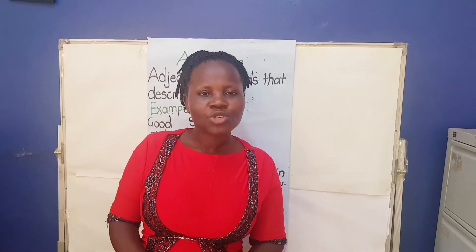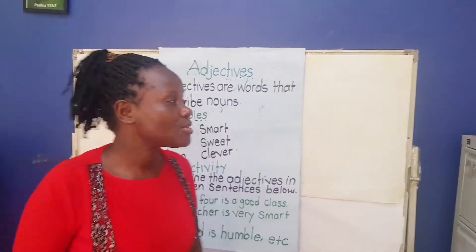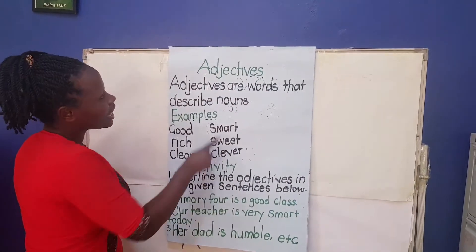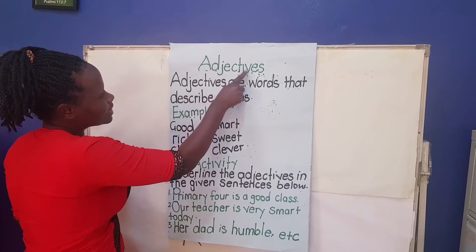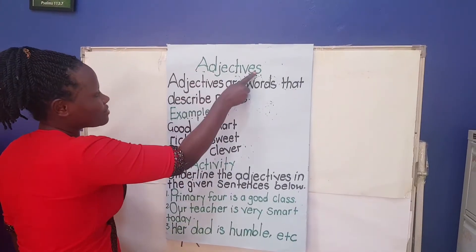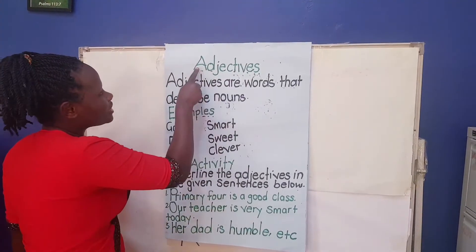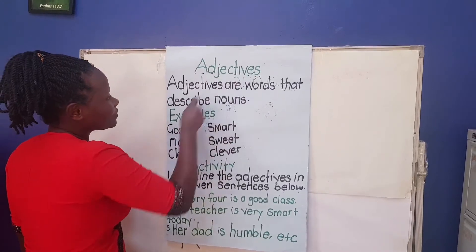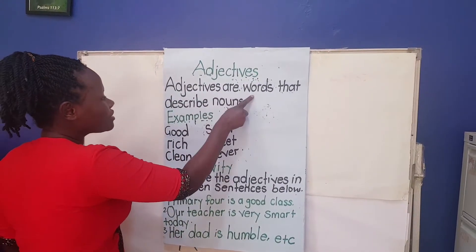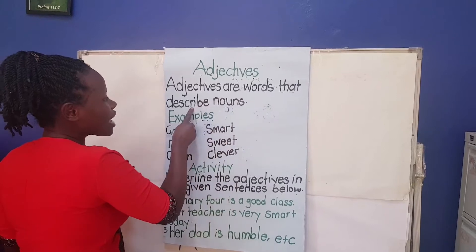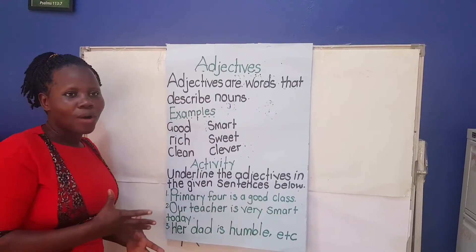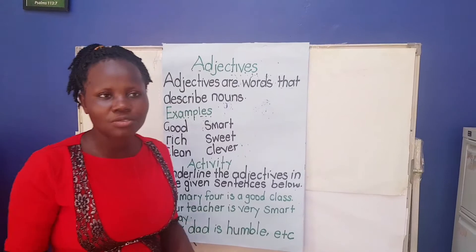So let us go to what we're going to look at today. We're going to look at adjectives. Say it together with me: adjectives. Again, adjectives. What are adjectives? Adjectives are words that describe nouns.